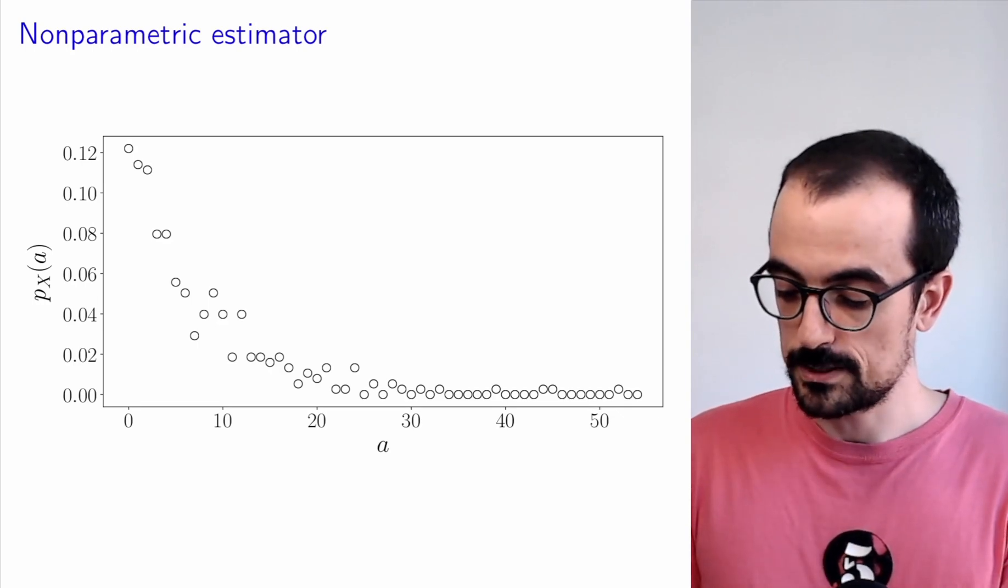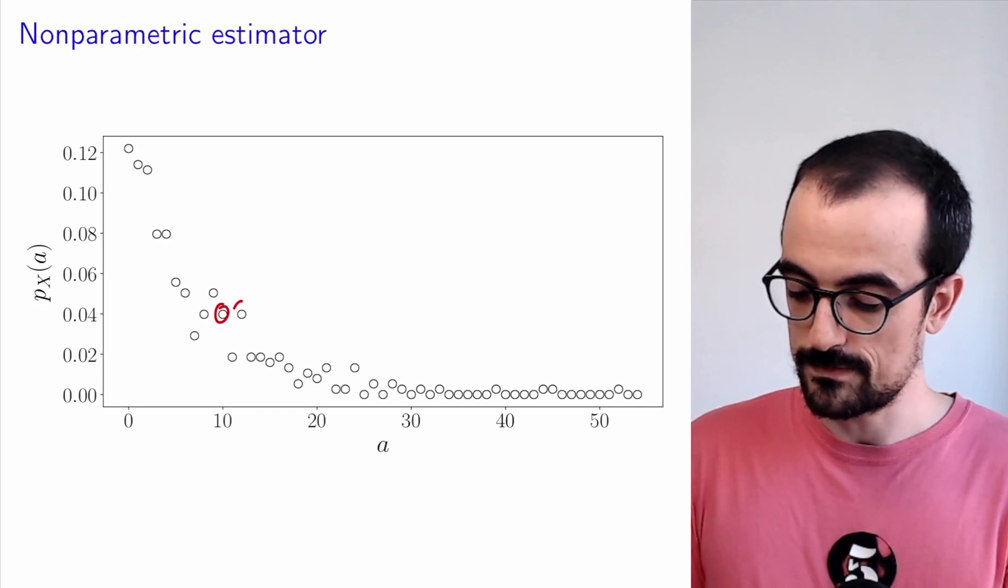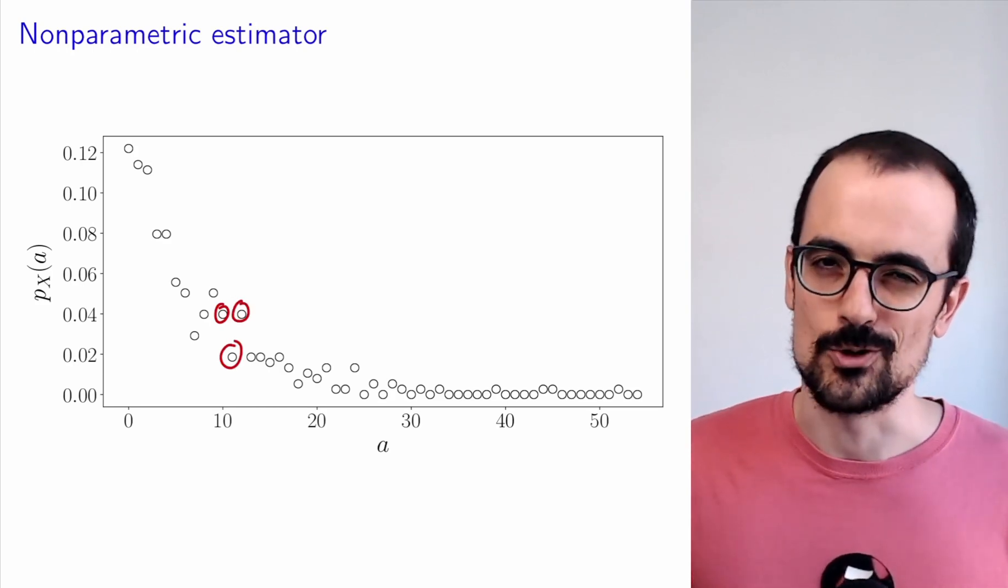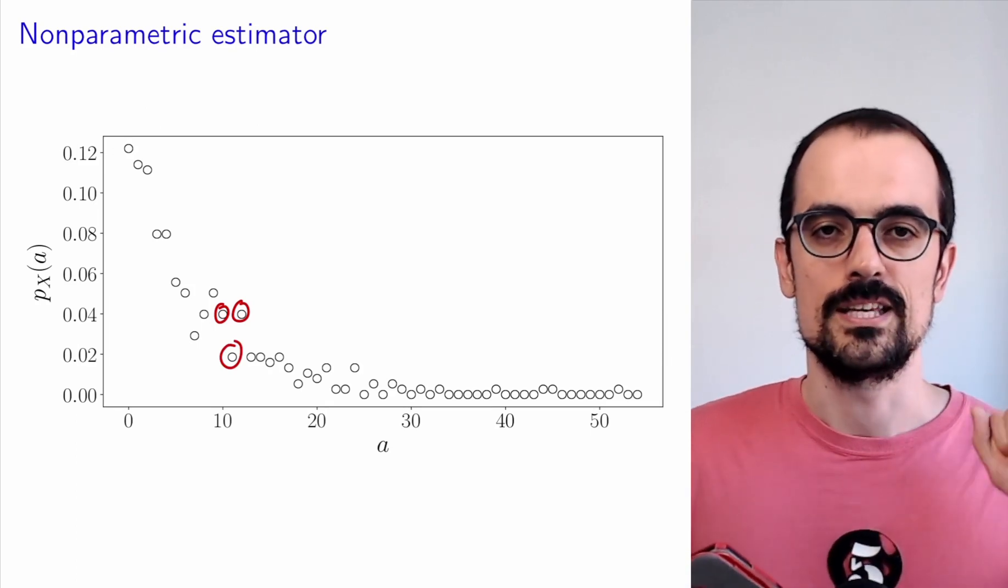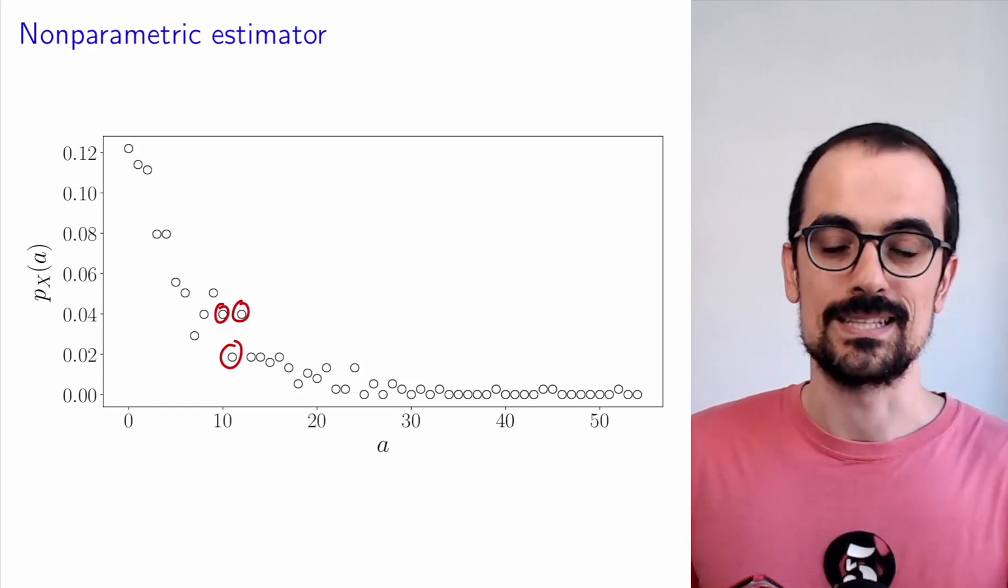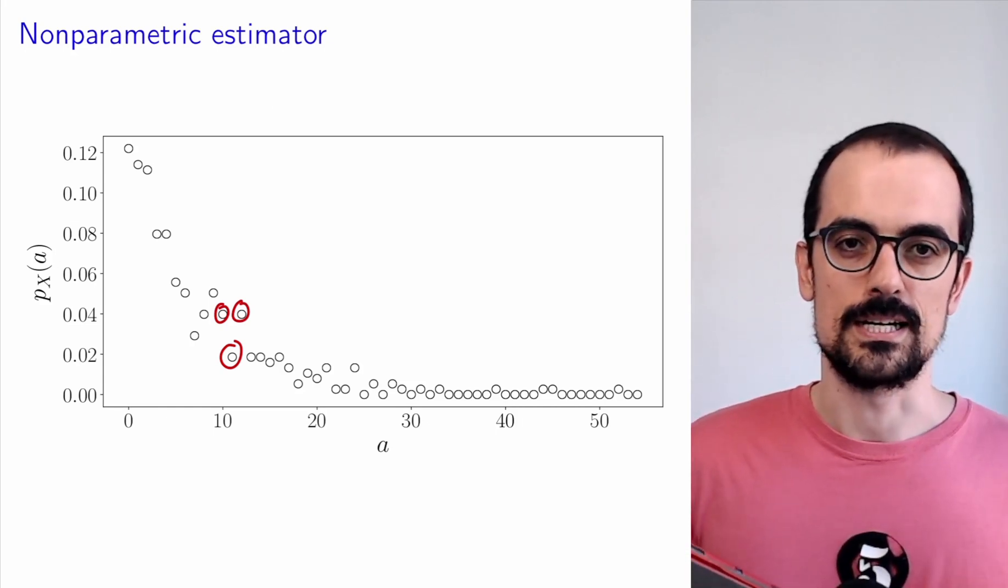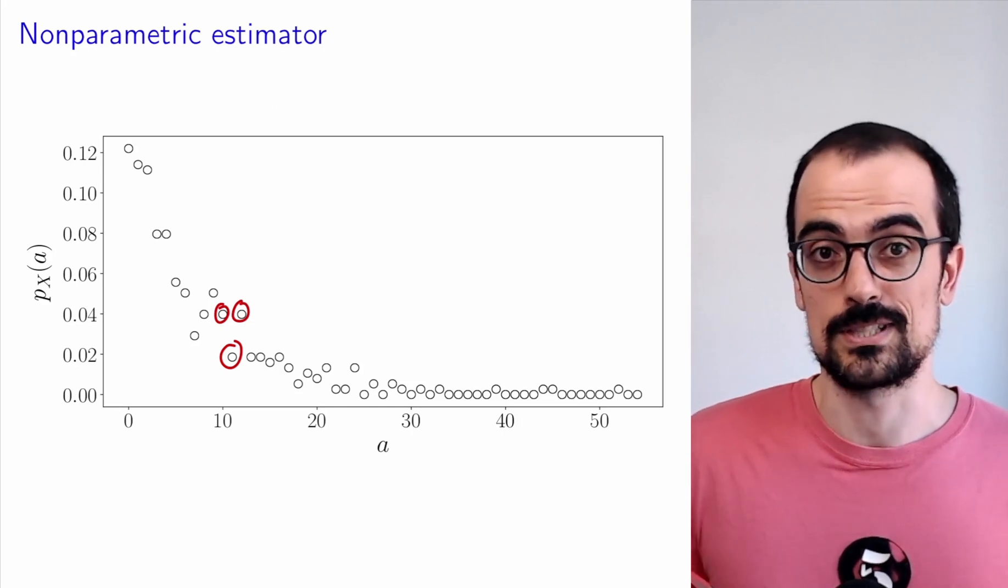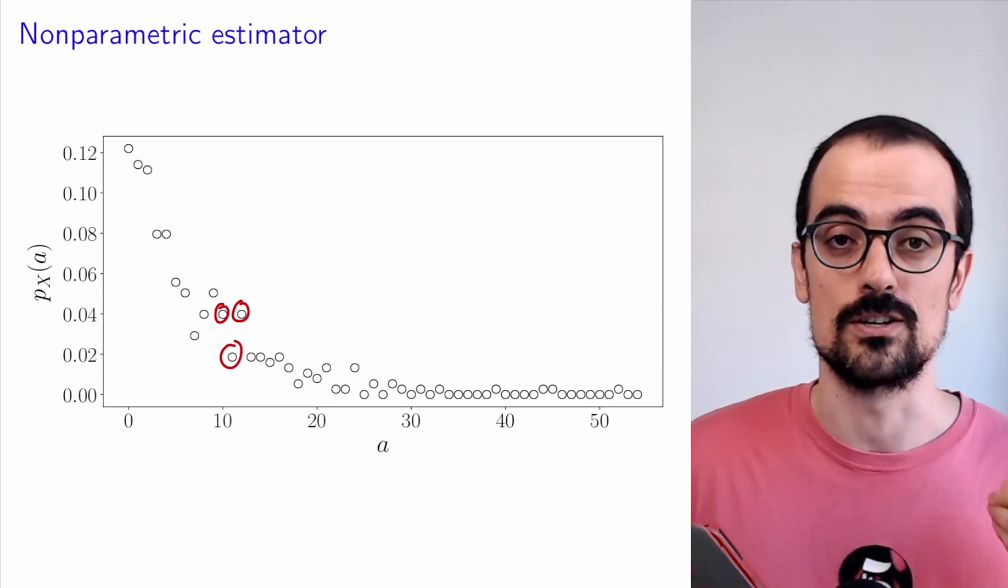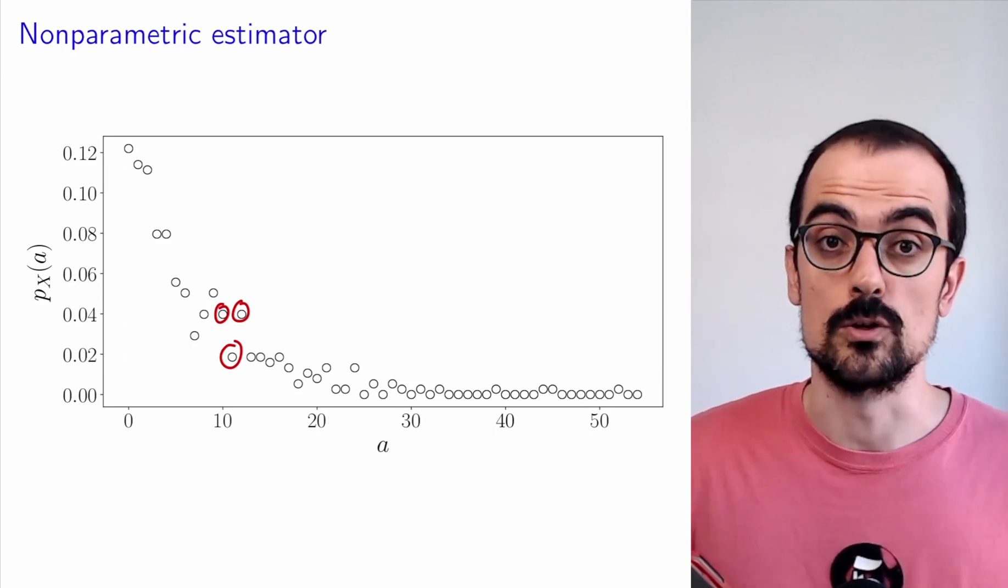Let's take 10 for example. It's kind of strange that 10 has the same value as 12 and then 11 is so much lower. That just looks like noise. There's no reason why the probability that he makes 10 free throws in a row would be higher than 11 but the same as 12. This comes from the fact that we have limited data, and when you're computing empirical probabilities with limited data they're going to be noisy.